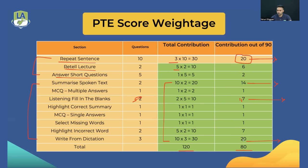If you're missing out in listening, focus first on Repeat Sentence and Write From Dictation — these cover around 50% of your listening score. Then work on Summarize Spoken Text, Listening Fill in the Blanks, and Highlight Incorrect Words. Re-tell Lecture is somewhat important too. Answer Short Questions, MCQ Multiple, Highlight Correct Summary, MCQ Single, and Select Missing Words are not important. Focus on those core tasks and your listening scores will go up.